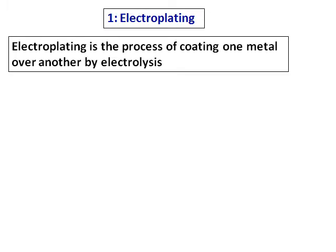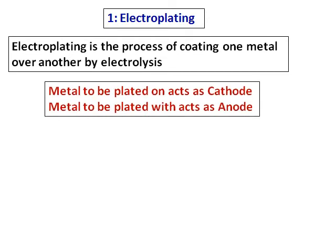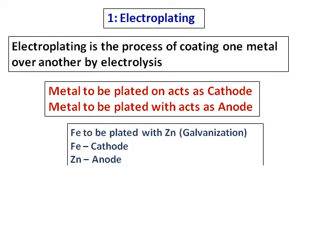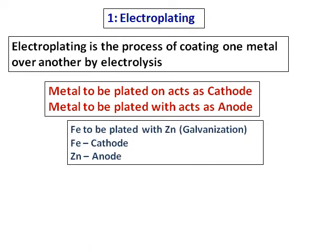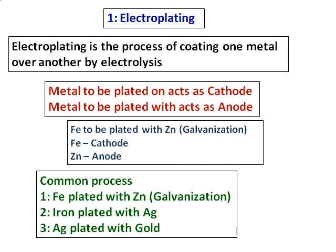Electroplating is a process of coating one metal over another by electrolysis. The metal to be plated will act as the cathode, and the metal to be plated with will act as the anode. For example, if we want to plate iron with zinc, the iron acts as the cathode and the zinc acts as the anode. When current is passed, the zinc gets oxidized, moves to the cathode, and the zinc ions get reduced, forming a zinc coating on the iron — this prevents corrosion of iron. The process of coating iron with zinc is also called galvanization. Sometimes iron is plated with silver as well.